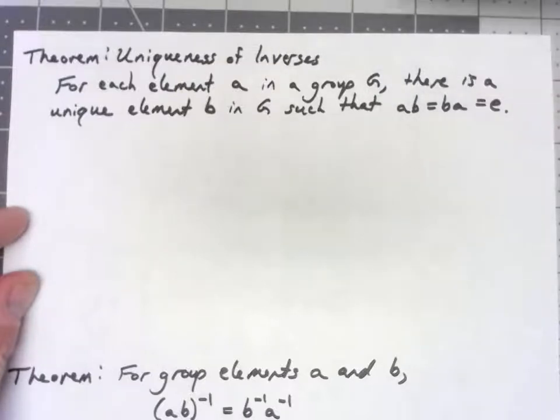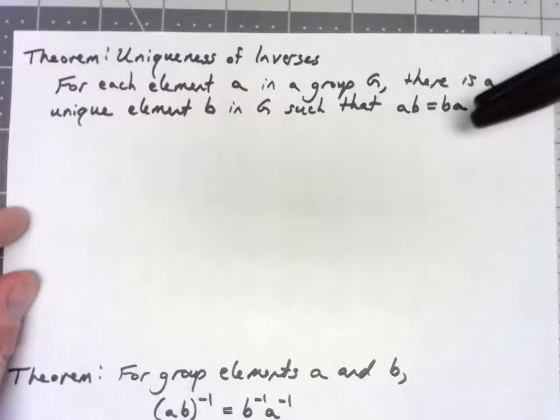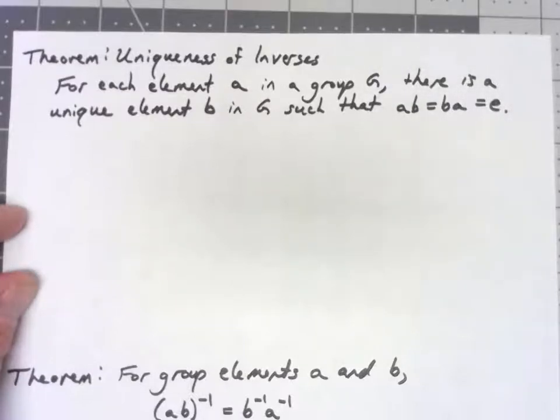In the last theorem we proved that there was a unique identity, but now we want to prove that inverses are unique as well.